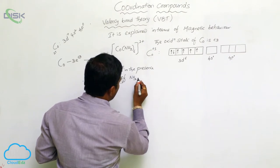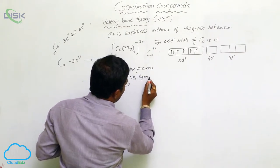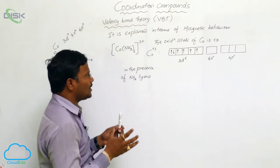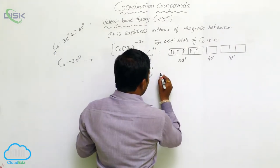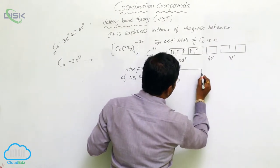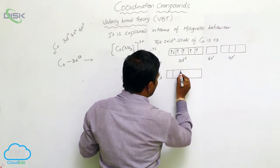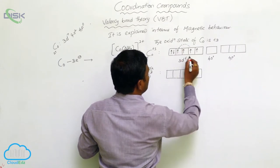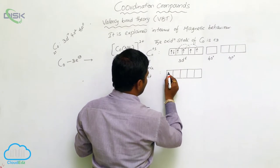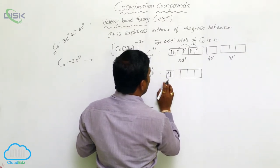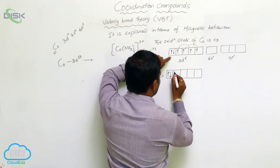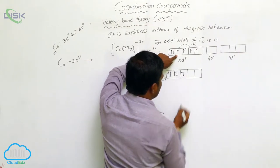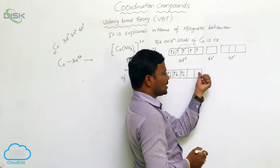In the presence of ammonia as a ligand, when ammonia approaches near the central metal ion Co³⁺, a rearrangement of electrons is observed in the respective orbitals. One electron from one sub-orbital and another electron pair together, so the first three sub-orbitals of 3d each hold two electrons, and the last two 3d orbitals become empty.